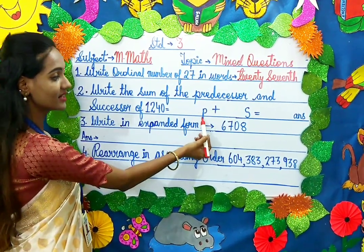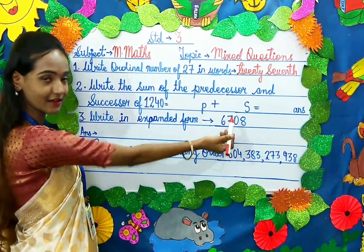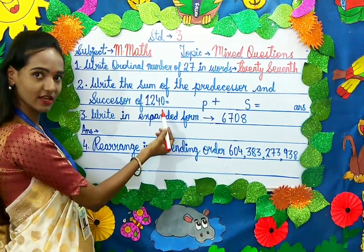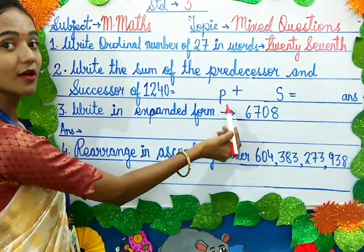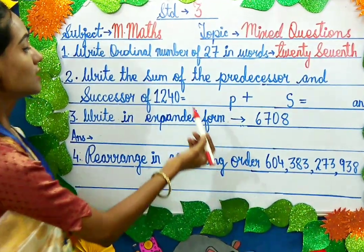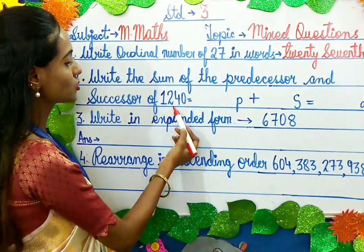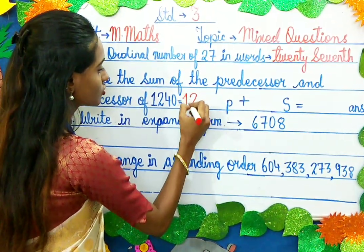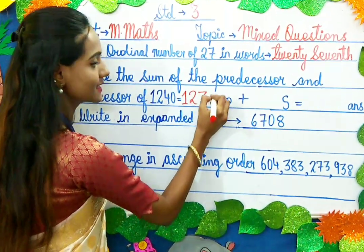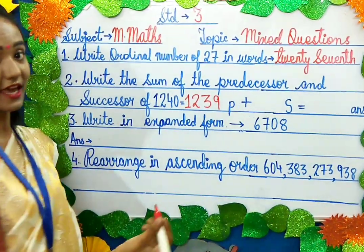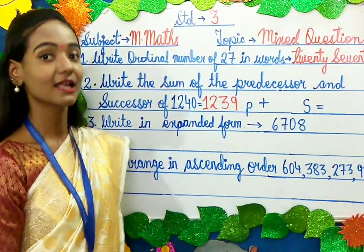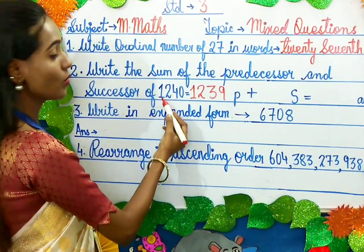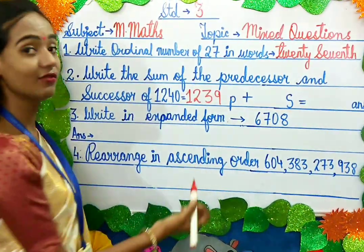Come on children, let's solve the question. The question says 'sum', which means we add the predecessor and the successor. Now 1240 is the given number. P stands for predecessor, so the predecessor of 1240 will be 1239.